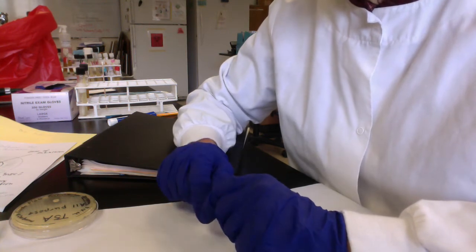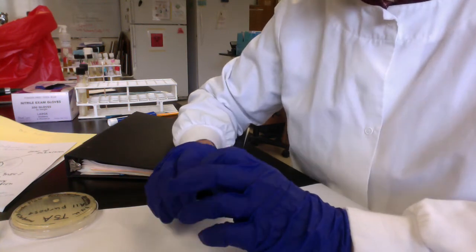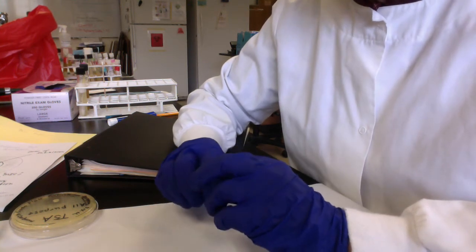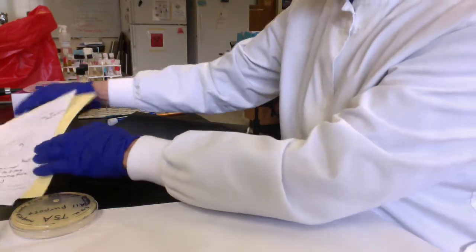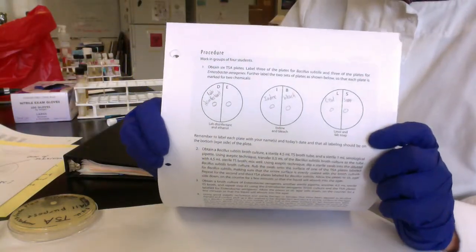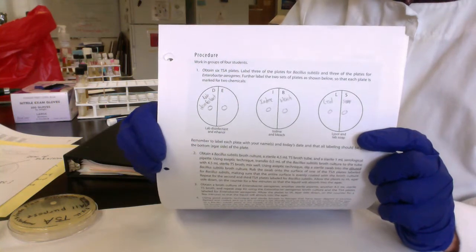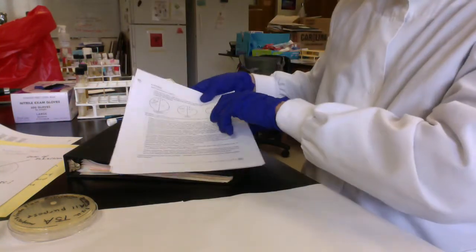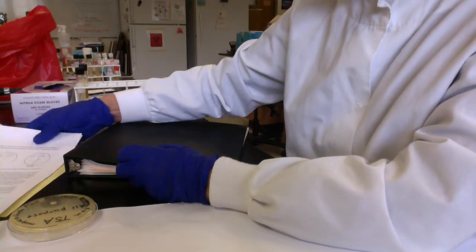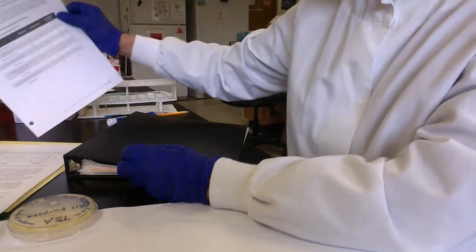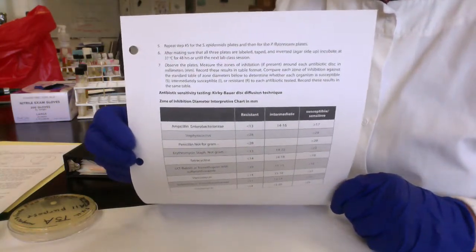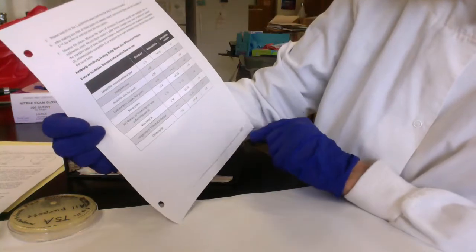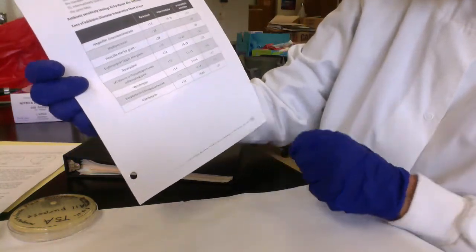We'll do the results in another video and discuss historically what kind of results we got. In our first experiment we gathered diameters of the zone of inhibition to draw conclusions. For Chapter 14, Lab 2, we were going to do the Kirby-Bauer disc diffusion studies for antibiotic sensitivity testing. This table on page 163 in your lab manual would be really important.